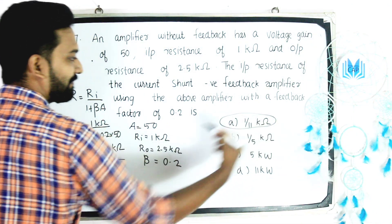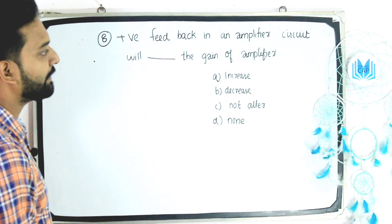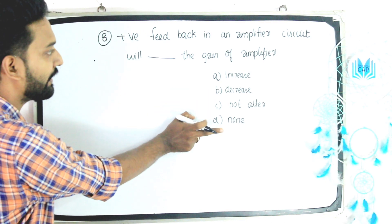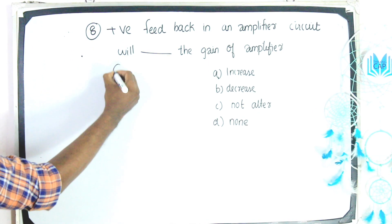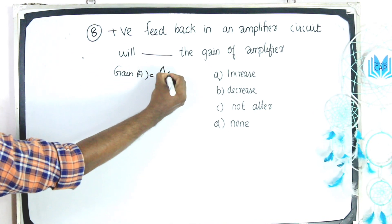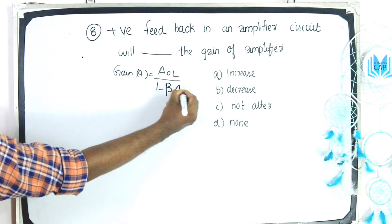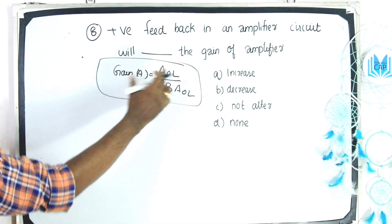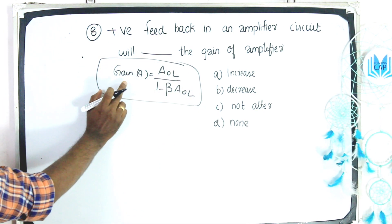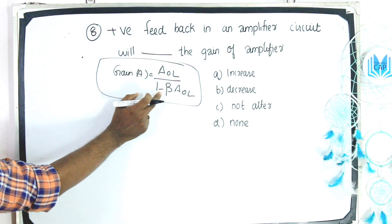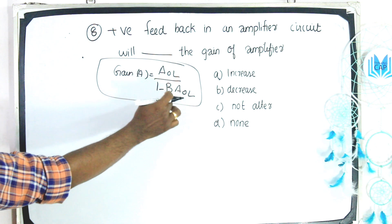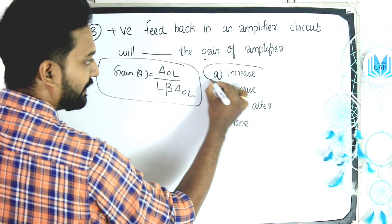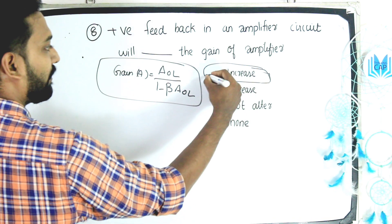Question 7: Positive feedback in an amplifier circuit will — increase, decrease, not alter, or none — the gain of the amplifier. The closed loop gain with positive feedback is AOL divided by 1 minus beta into AOL. This formula shows the gain increases with positive feedback. The answer is option A: increase.